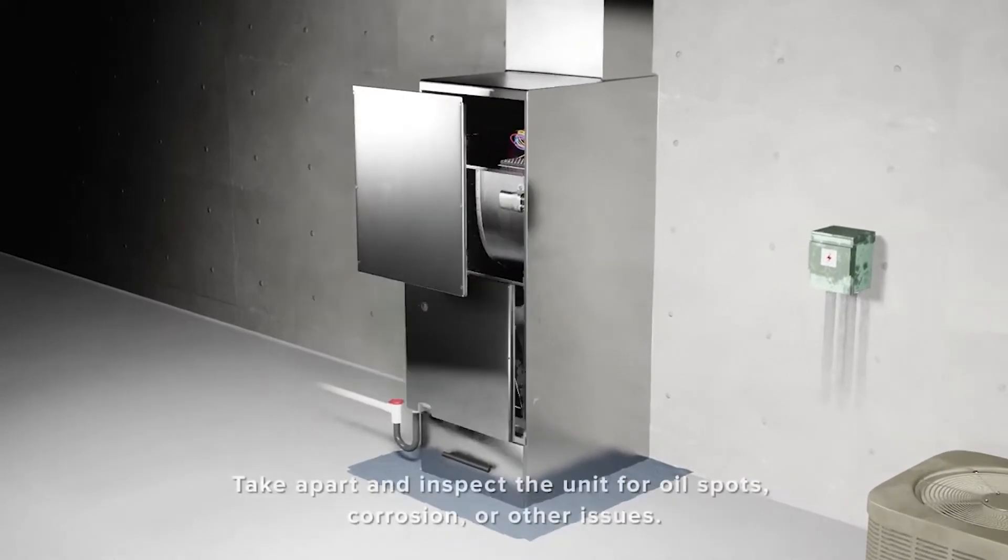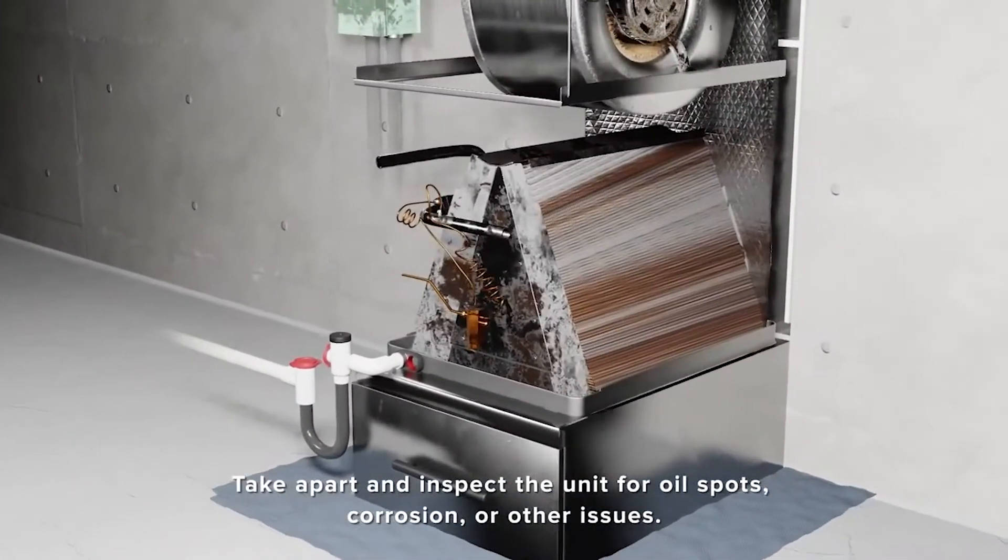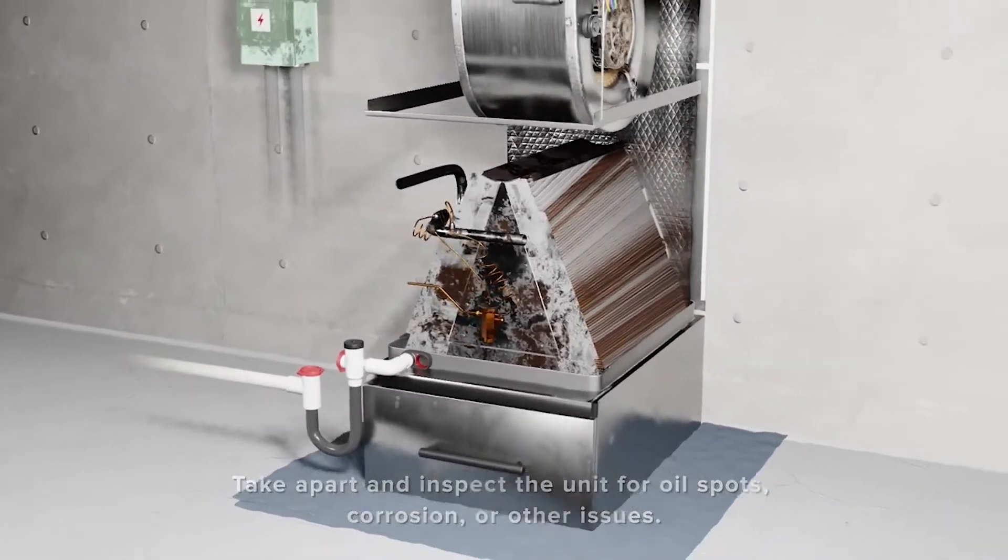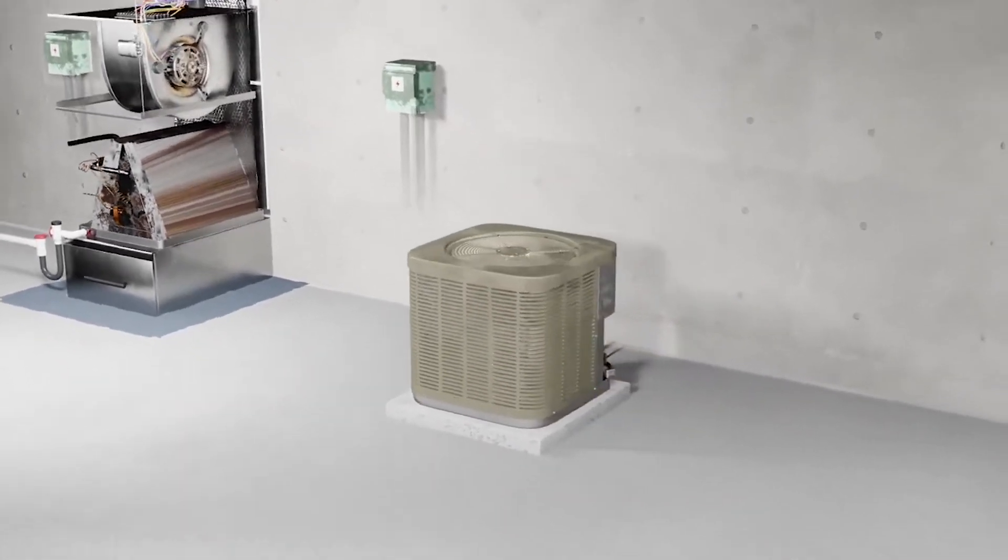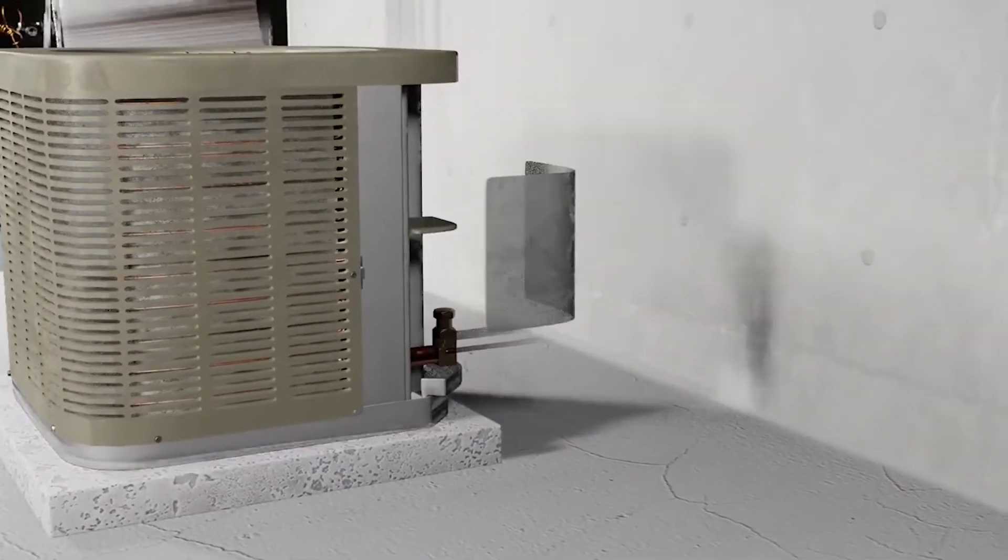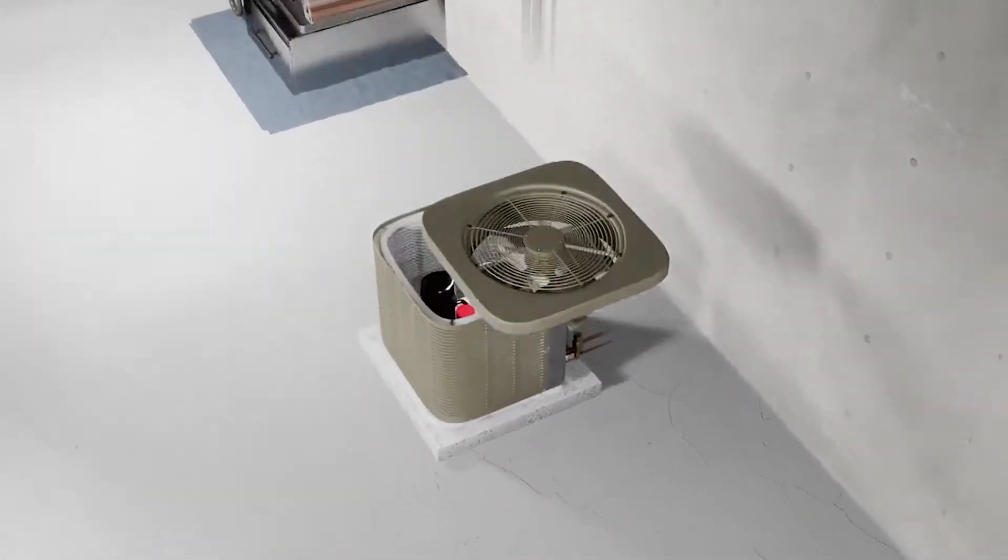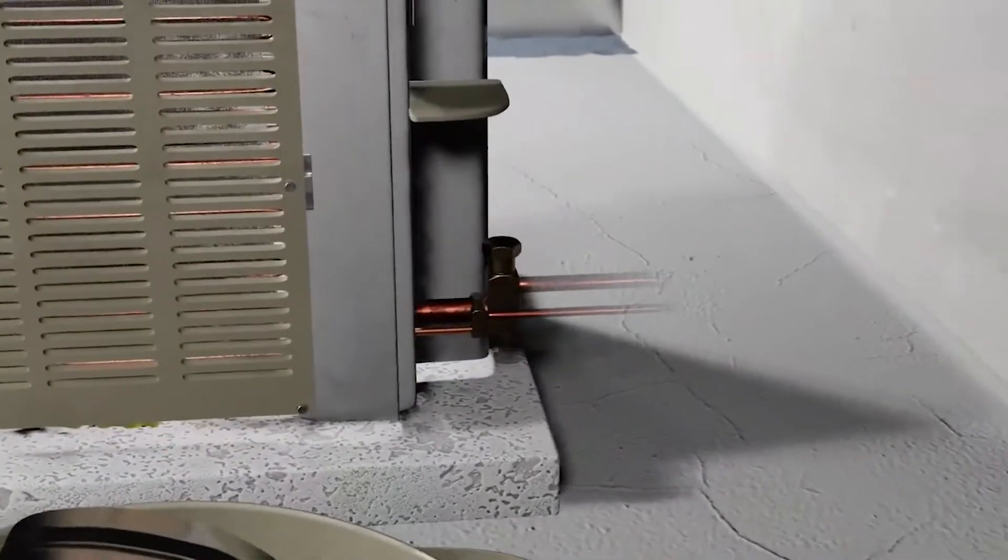Inspect the equipment and component cleanliness and condition. This includes the blower wheel, the evaporator coil, and the condenser coil. Pay attention to any signs of oil spotting, which may indicate refrigerant leak points.